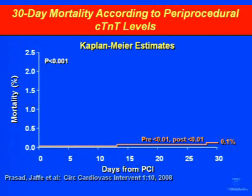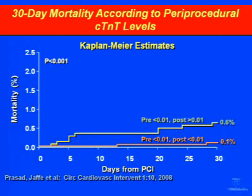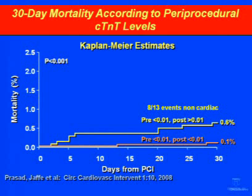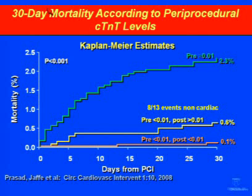If the baseline value is less than the 99th percentile, staying below it means you do quite well. If you end up going above the 99th percentile, there's a small increment associated with a p-value of 0.048. However, eight of the 13 events were non-cardiac and were in patients who were severely ill—such as cancer patients—in whom PCI was done for humane reasons rather than more definitive procedures. So there was no cardiovascular signal short-term at 30 days, and if the baseline was elevated, there was a tremendously important prognostic signal.